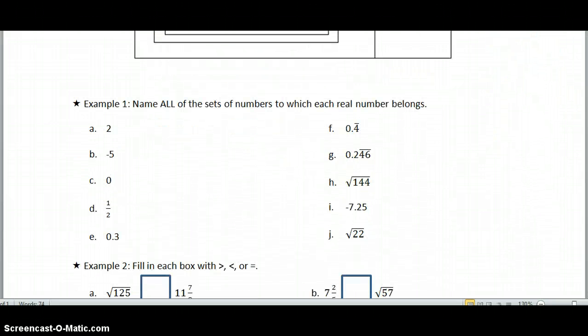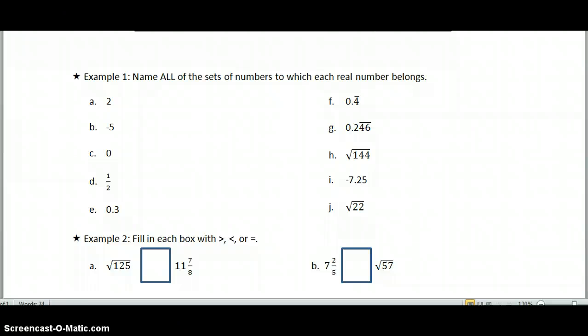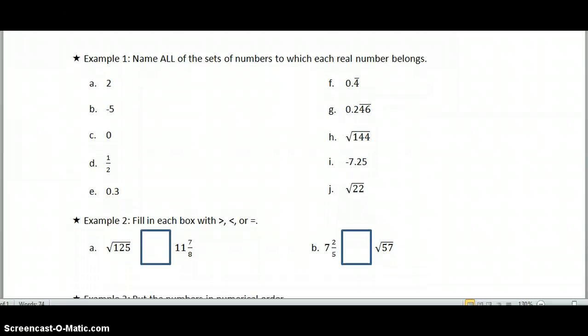Our first example is asking you to categorize each of these numbers by one of the categories above. So two, we're supposed to name all the sets that they belong to. So two is counting, two is whole, it is also an integer, and it is rational, and it is real. It is a real number. Negative five starts with integers because it's negative, and it's rational, and it's real.